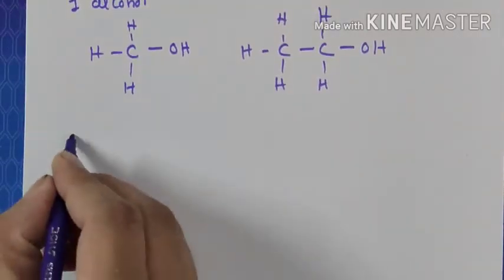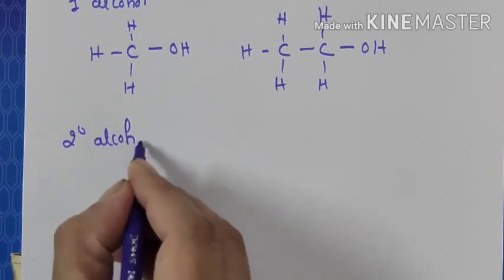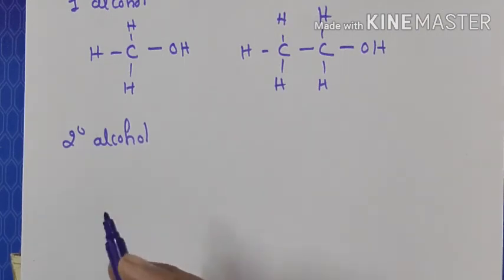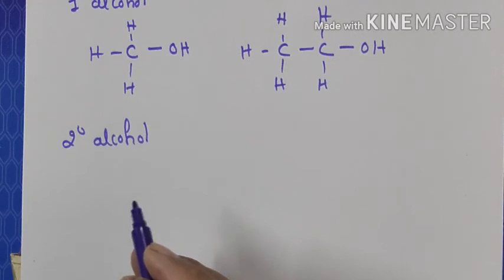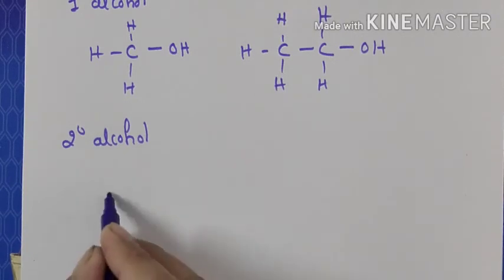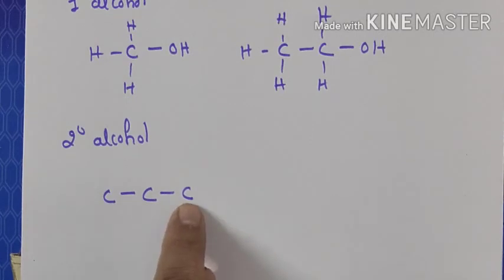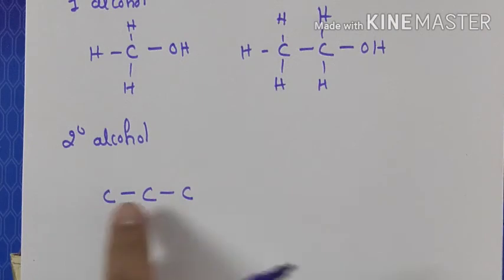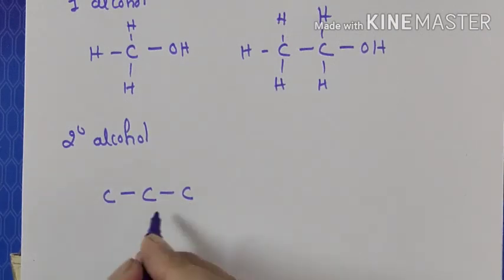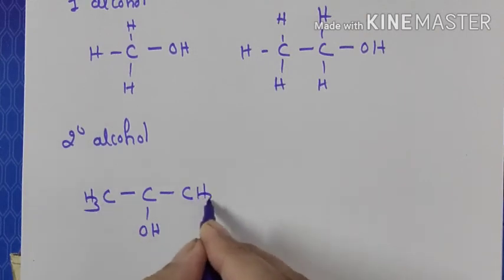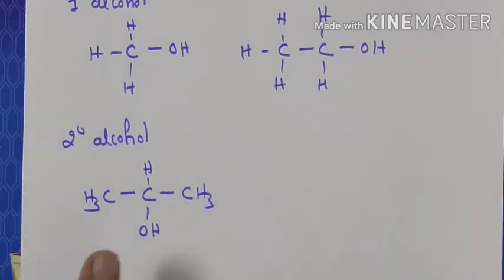Next is secondary — 2 degree — alcohol. In 2 degree alcohol, the OH should be attached to a carbon which is secondary, meaning attached to 2 other carbons. For example, a 3-carbon chain where the middle carbon is attached to 2 carbons — that is secondary carbon. If OH is present on this secondary carbon, it will be called secondary alcohol. For example, CH3-CHOH-CH3 — this is 2 degree alcohol.